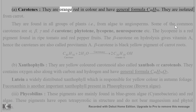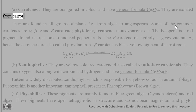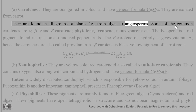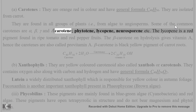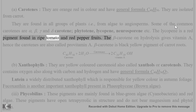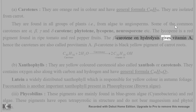Carotenes are orange-red in color and have the general formula C40H56. They are isolated from carrot and are found in all groups of plants, from algae to angiosperms. Some common carotenes are alpha-carotene, beta-carotene, phytadiene, lycopene, and neurosporene. Lycopene is a red pigment found in ripe tomato and red pepper fruits. On hydrolysis, carotene gives vitamin A; hence carotenes are also called pro-vitamin A. Beta-carotene is the black-yellow pigment of carrot roots.